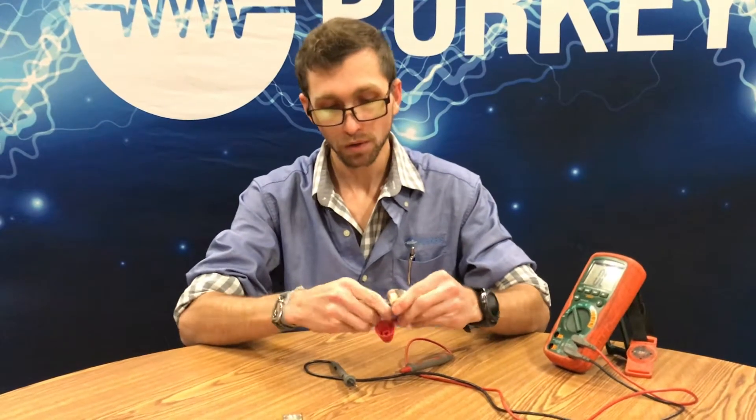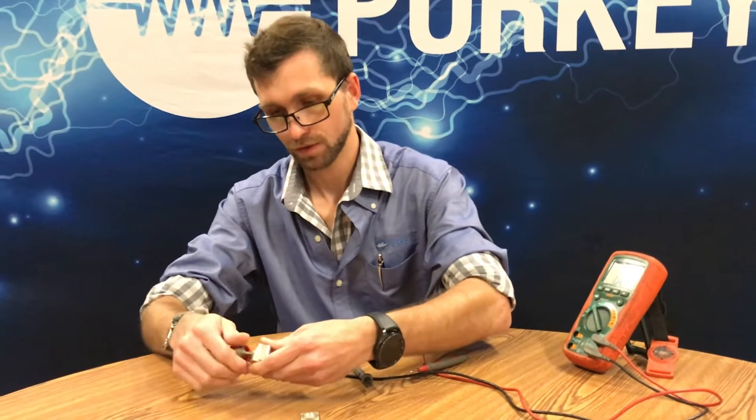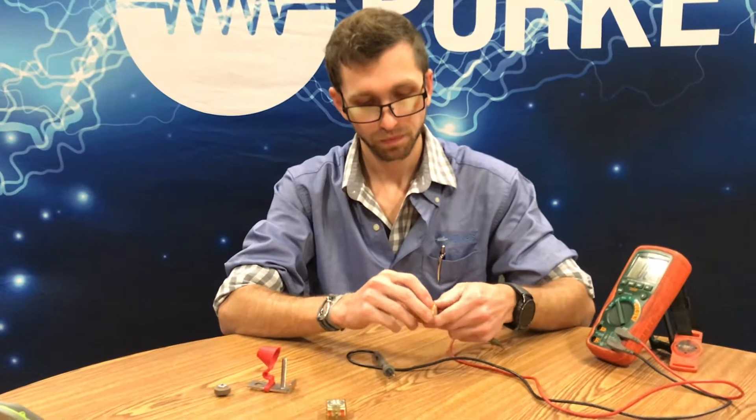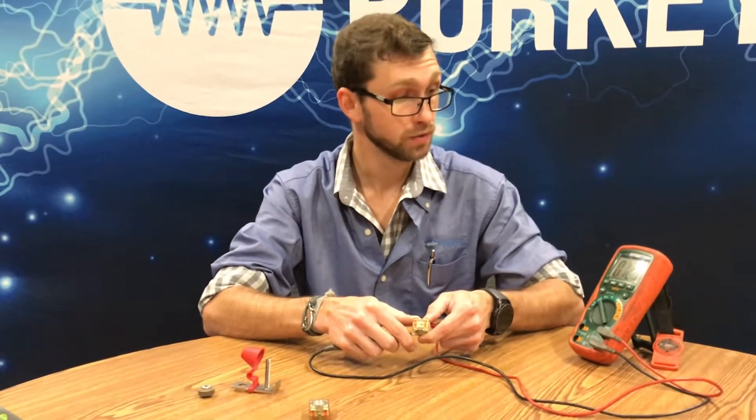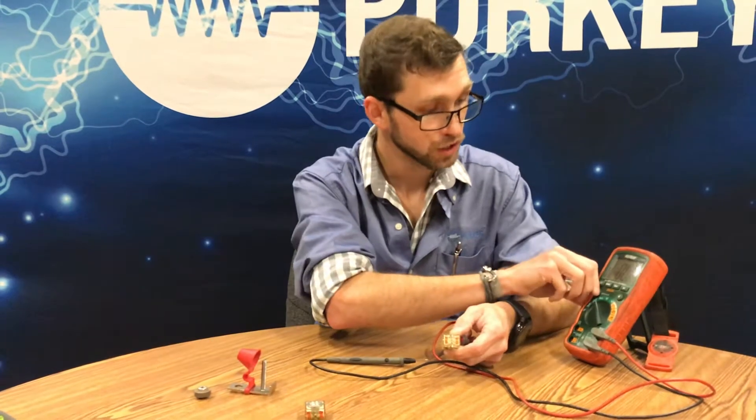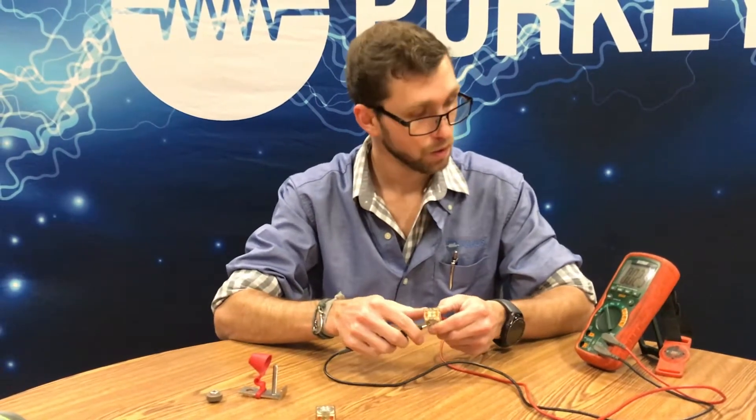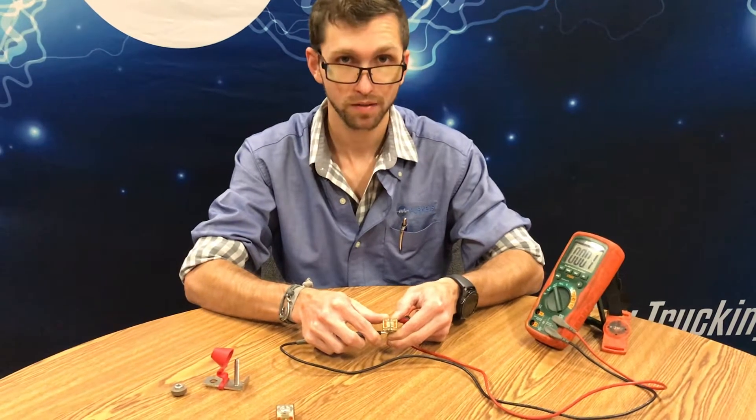If we were to take a new one, you would then see we do have continuity through there. If we switch it back to our ohms reading, we are now going to show a zero reading, very minuscule, something that's a lot more balanced, a lot more consistent. That's how you would test the fuse cube by itself.